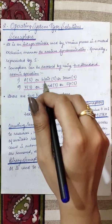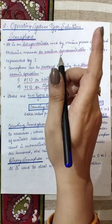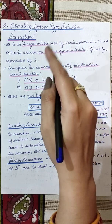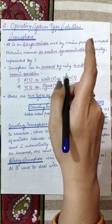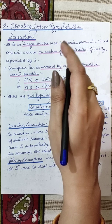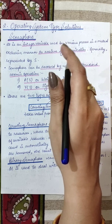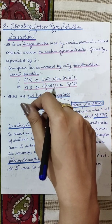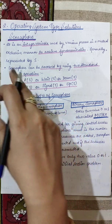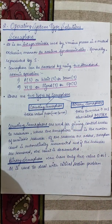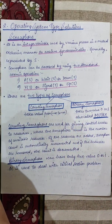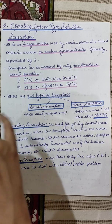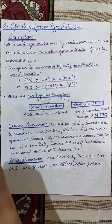Okay students, today's topic is the critical section problem solutions in the second category — operating system type of solutions. That means the operating system will provide system calls through which solutions will come. The first thing that comes is semaphores. Semaphore is divided further into counting and binary semaphores, which we will see right now.